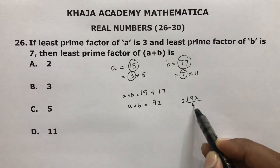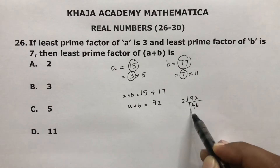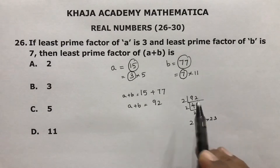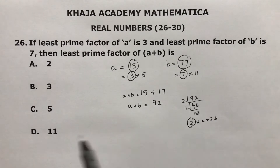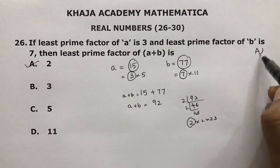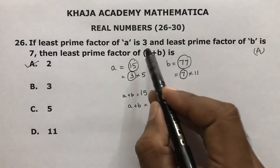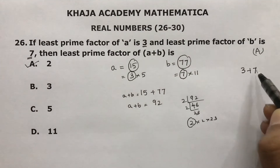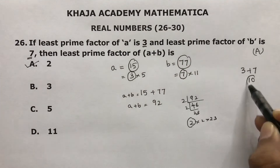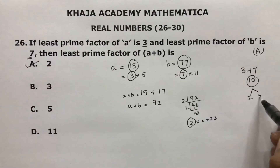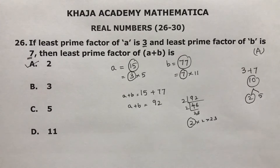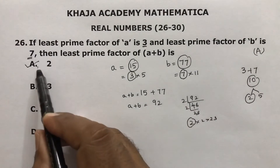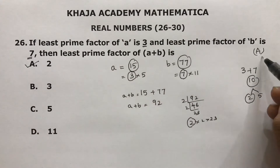For 92: 2 times 46, then 2 times 2 times 23, so the least prime factor is 2. The correct option is A. Alternatively, directly take 3 and 7: 3 plus 7 is 10, and the least prime factor of 10 is 2. So the least prime factor of a plus b is 2.